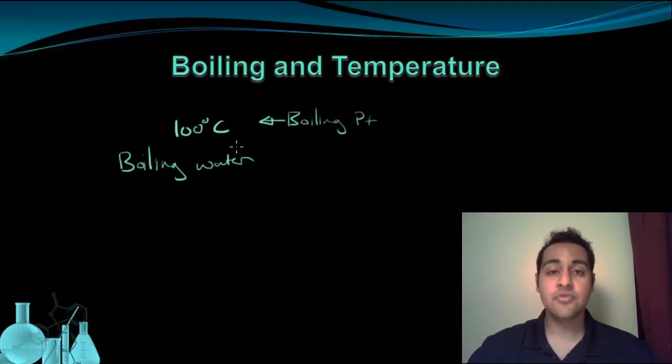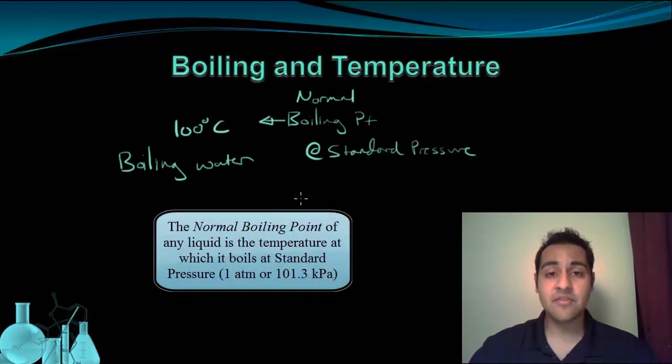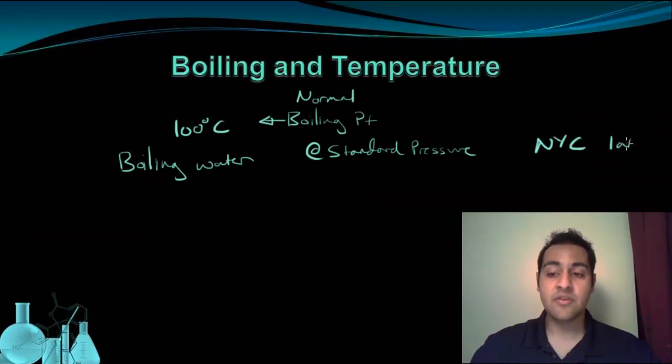And in fact, 100 degrees Celsius for water is actually called the normal boiling point. Because it occurs at standard pressure. So at one atmosphere pressure, that's the normal pressure at sea level. So us sitting here in New York City, we have one atmosphere of pressure. We're about at sea level.